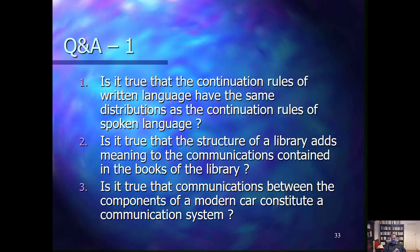Next: is it true that communications between components of the modern car form a communication system? We said that these communications between components form a set with certain continuation rules — they are very narrowly specified how one communication can follow another between car components. They also need communications with humans in order to make them meaningful in the context of society. Overall, the car itself does not constitute a communication system — it is too narrowly specified and enforced to constitute a human communication system.